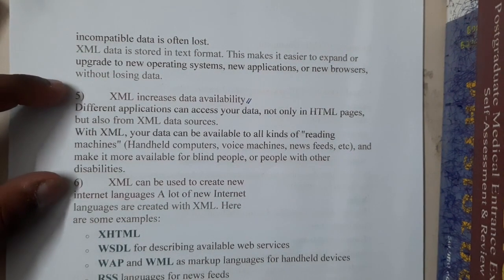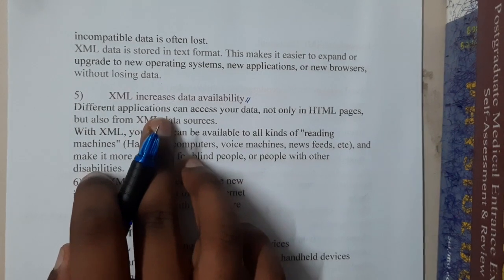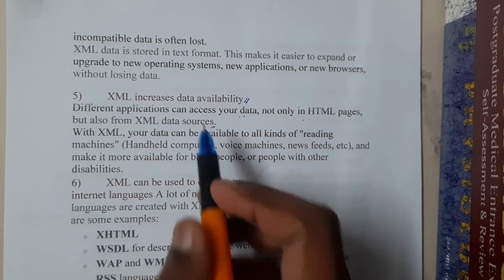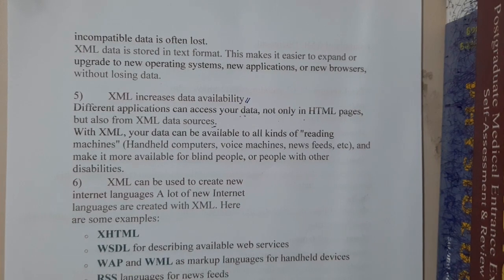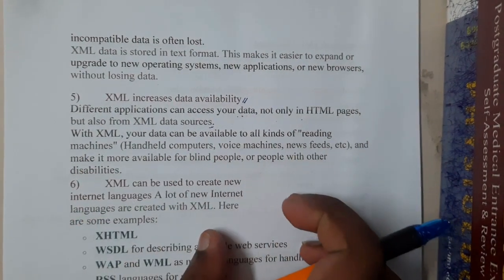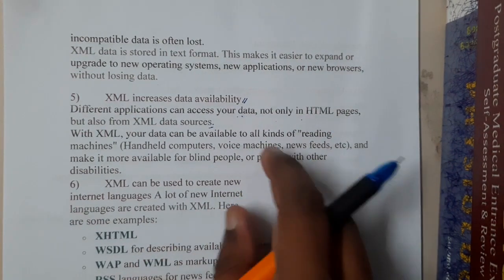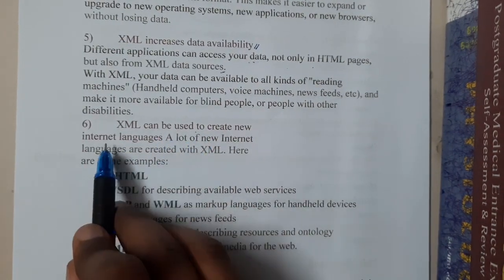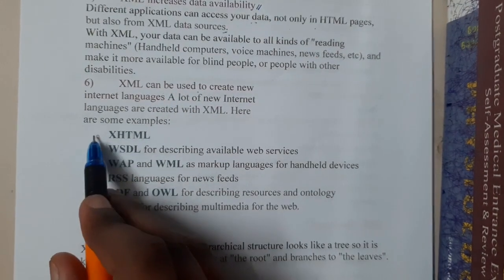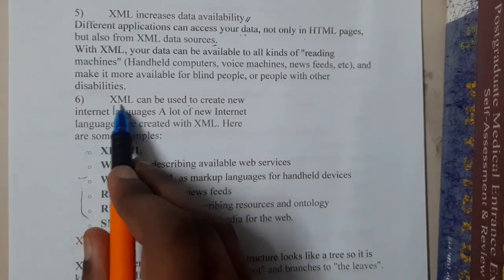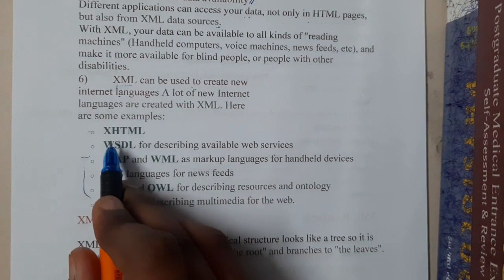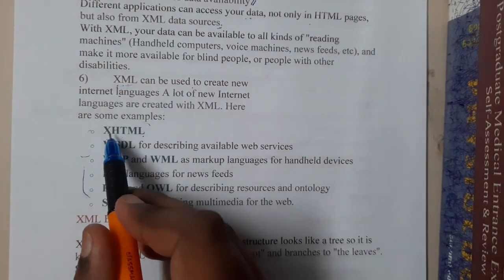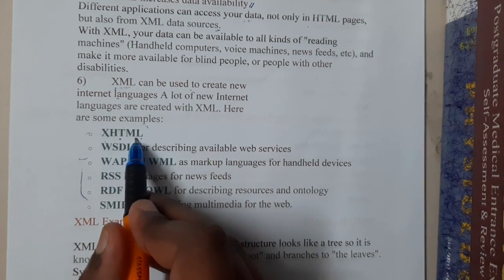XML increases data availability. Different applications can access your data not only from HTML pages but also from XML data sources. XML files are available persistently and the storage space they take is low. XML files can also be used to create new internet languages. For example, XHTML (Extensible HyperText Markup Language) is a language built on XML where you can also define your own tags.